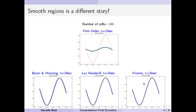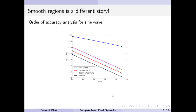This is one of the properties we would like to use with higher order methods — in fact, in this case, just a second order method. If we plot the error versus the number of cells, this is log of N (where N is the number of cells) versus log of L1 norm of error.